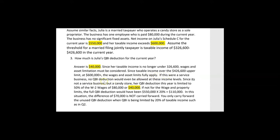Her taxable income exceeds $600,000, so the wage limits fully apply. If this were a service business, she'd get no QBI deduction at all. But since it's not a service business — it's a candy store, a retail or manufacturing-type business — she can still get a QBI deduction, but it's limited to 50% of the W2 wages. Those W2 wages we've been ignoring in the first two questions now come into play. 50% of the $80,000 W2 wages gives a maximum QBI deduction of $40,000.